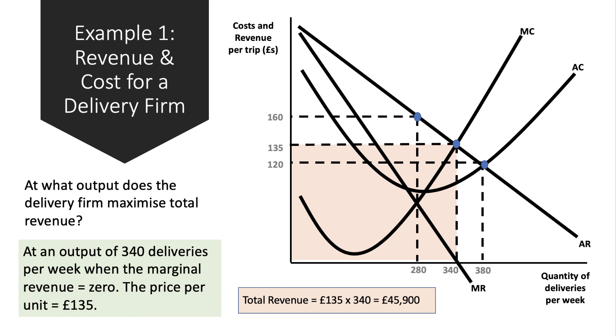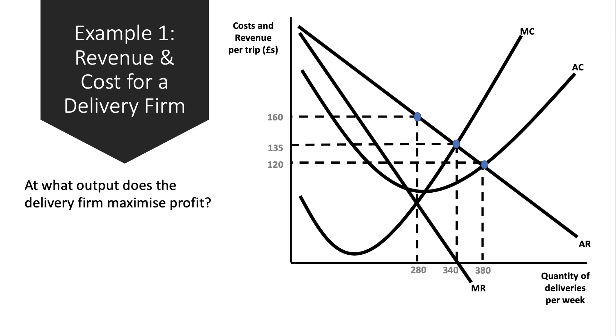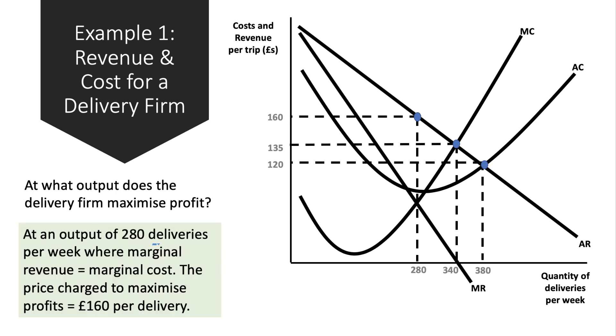But the key question in this video is what output does the firm maximize profit? You achieve that at the intersection between marginal cost and marginal revenue, which gives an output of 280 deliveries per week. That's where MR meets MC, and the price charged to maximize profit will be higher - you can charge £160 per delivery.